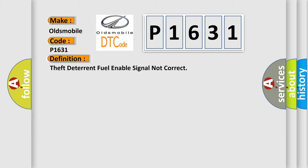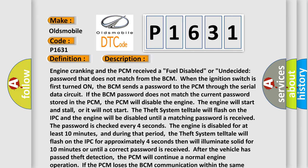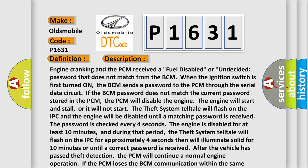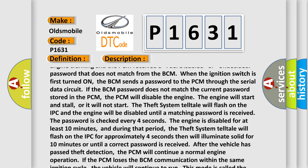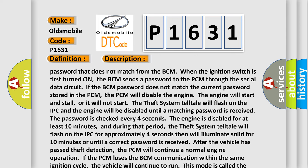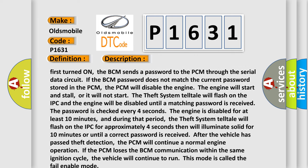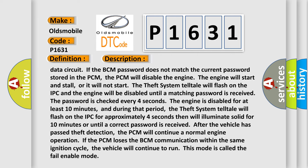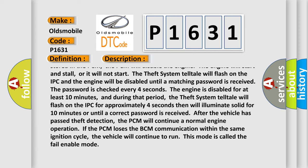Here is a short description of this DTC code. Engine cranking and the PCM received a fuel disabled or undecided password that does not match from the BCM. When the ignition switch is first turned on, the BCM sends a password to the PCM through the serial data circuit. If the BCM password does not match the current password stored in the PCM, the PCM will disable the engine. The engine will start and stall, or it will not start. The theft system telltale will flash on the IPC and the engine will be disabled until a matching password is received.